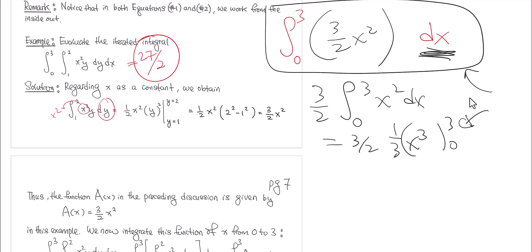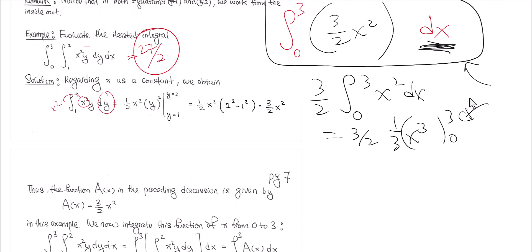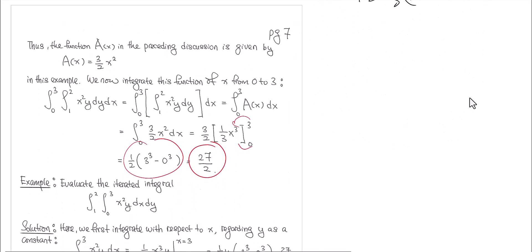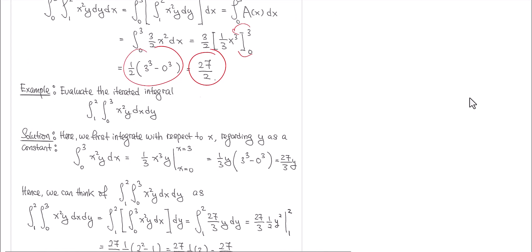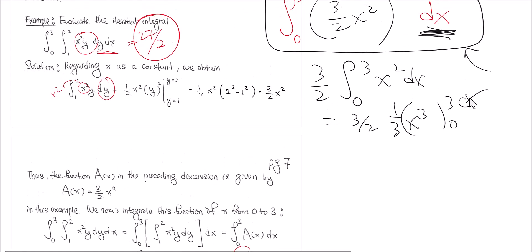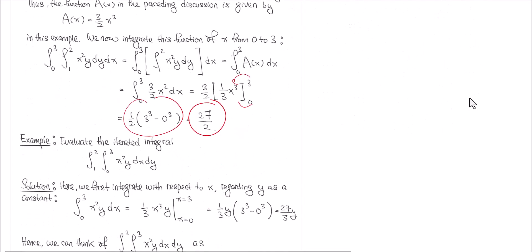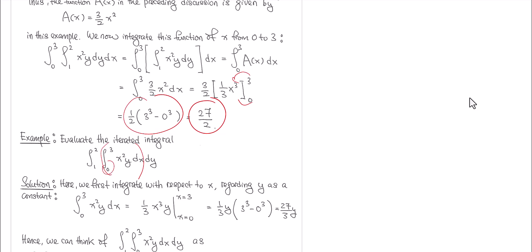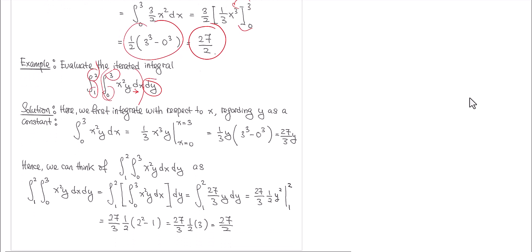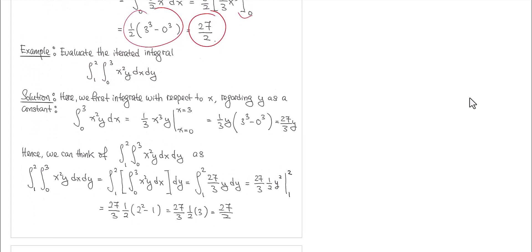That's what we call an iterated integral. Now let's look at exactly the same x²y, but instead of dy dx, let's reverse it to dx dy and also reverse the ranges of integration. Originally y is from 1 to 2 and x is from 0 to 3. When we reverse, x is from 0 to 3 on the inner integral and y is from 1 to 2 on the outer. If you repeat this process, you will get the same answer.